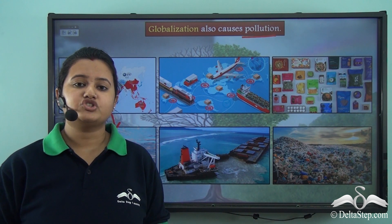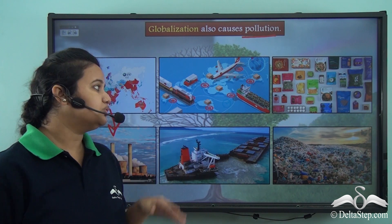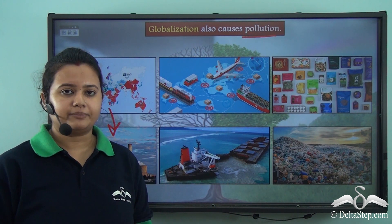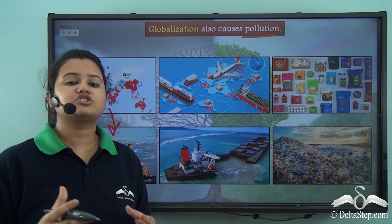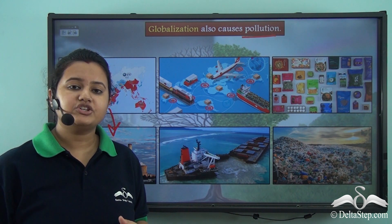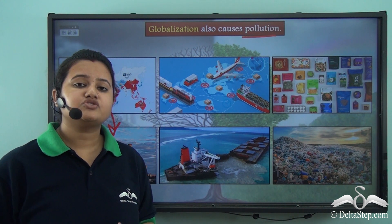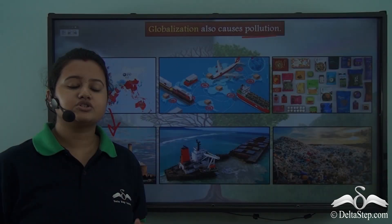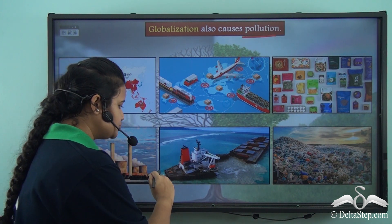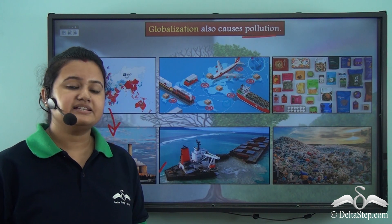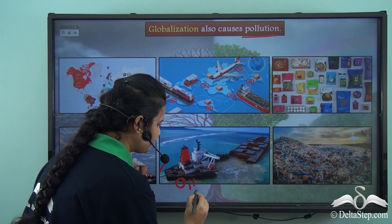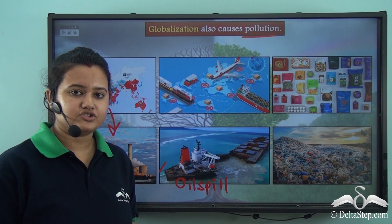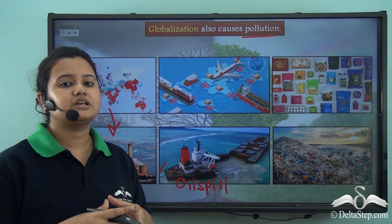Another way in which globalization leads to pollution is through trade of goods. Trade of goods takes place through transportation. Land-based transportation requires infrastructural development like setting up of bridges and roads. These infrastructural developments lead to loss of habitat and cause pollution. Also, transportation through seas or oceans may cause accidental cases like oil spills or chemical leakages, which degrade the quality of water bodies and thereby cause pollution.